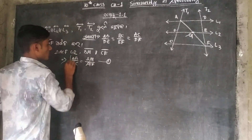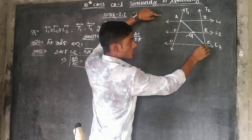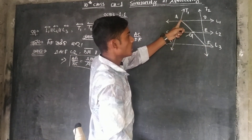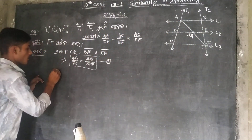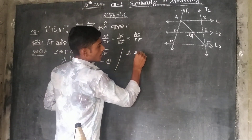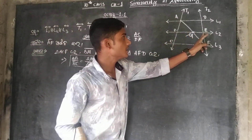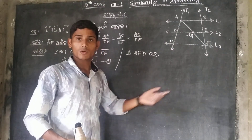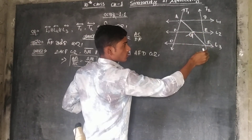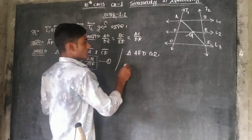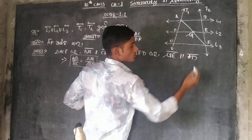Here we go. Consider this — you should consider why AF, DE are parallel. EF is parallel to ED as well. So EF by DE is parallel, and ED is parallel.